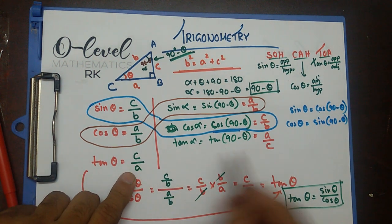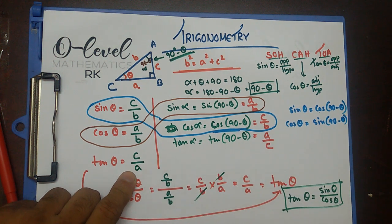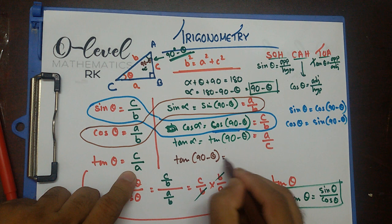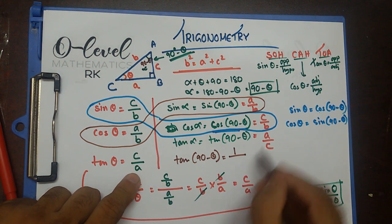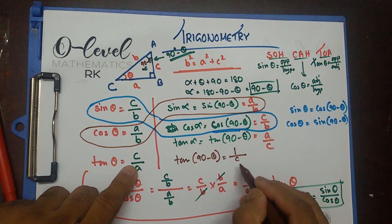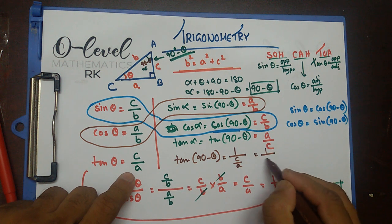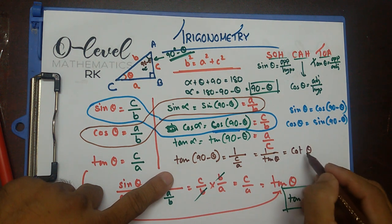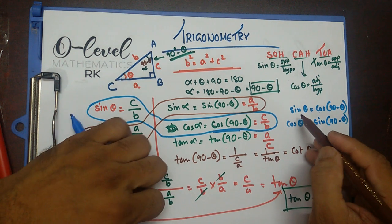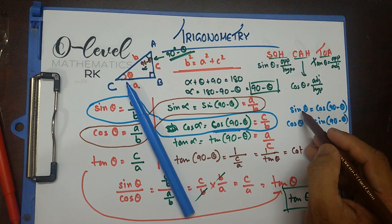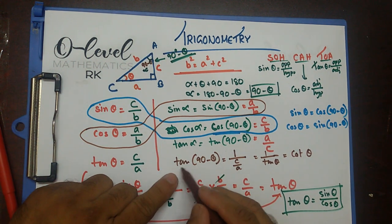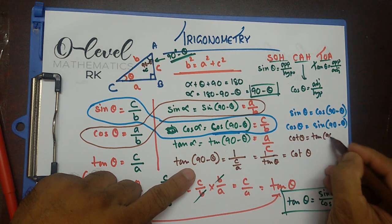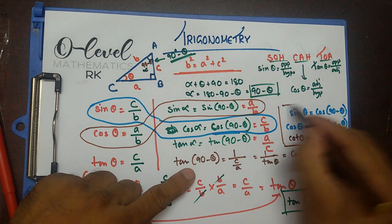What about tangent? Tan theta is C over A, and tan(90 minus theta) is A over C. These are reciprocals of each other, so tan(90 minus theta) equals 1 over tan theta. We represent the reciprocal of tangent as cotangent — cot theta. So cot theta equals tan(90 minus theta). That's another useful formula.